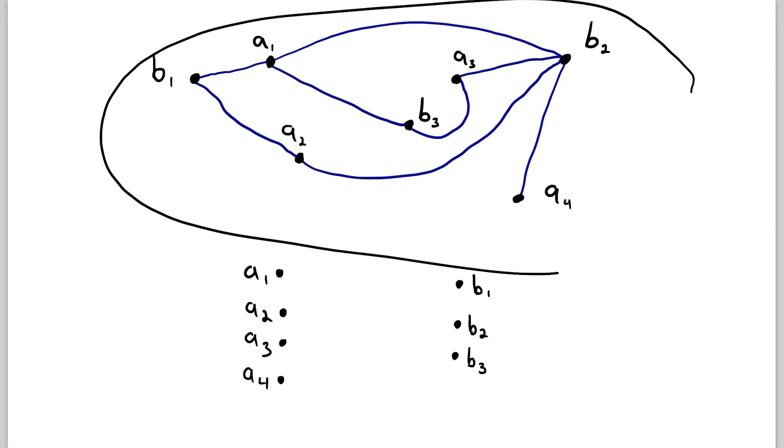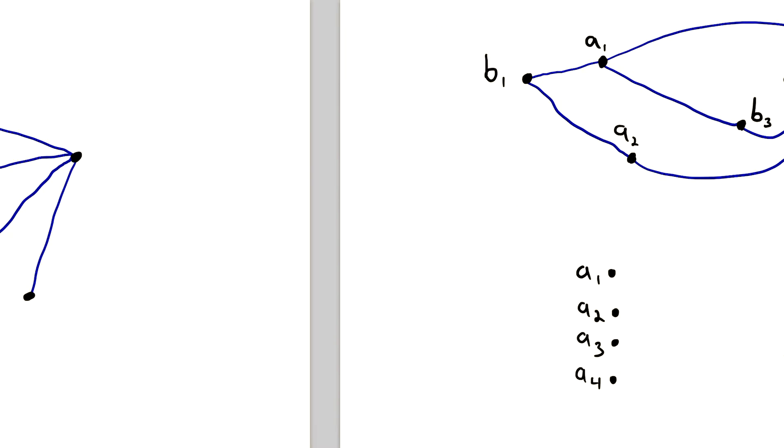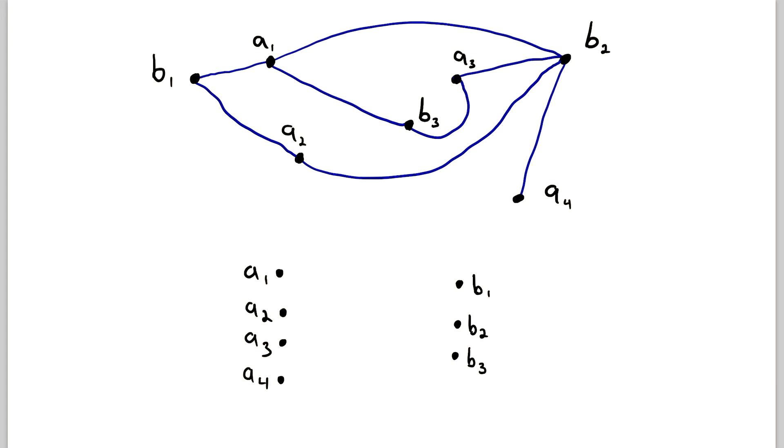So this is the graph from the previous page, but I've labeled the vertices. I'll just swipe back and forth. You can see clearly it's the same graph. I've labeled some of the vertices A1 through A4 and I've labeled some of the vertices B1 through B3. And I've drawn the vertices down here as well so we can fill in the edges and see that indeed this is a bipartite graph. So let's start drawing the edges and see if it checks out.